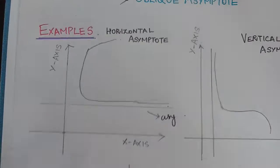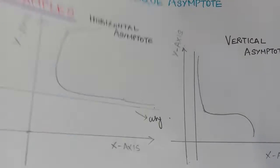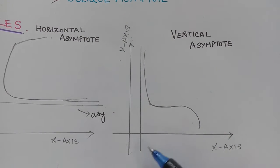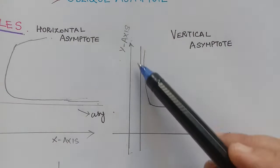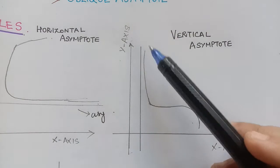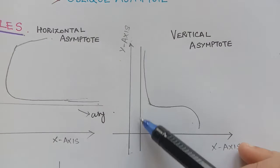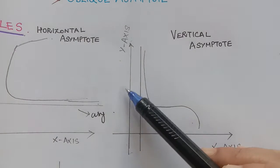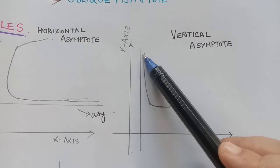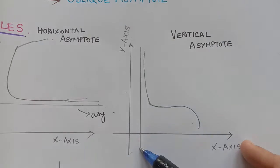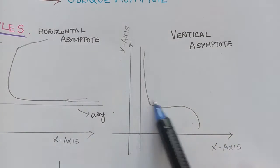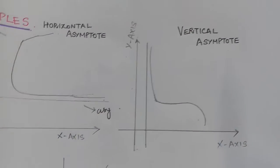In another example, we have a curve where a line approaches the curve at infinity. We can see that that line is parallel to the y-axis, and so this line is said to be the vertical asymptote for the given curve.